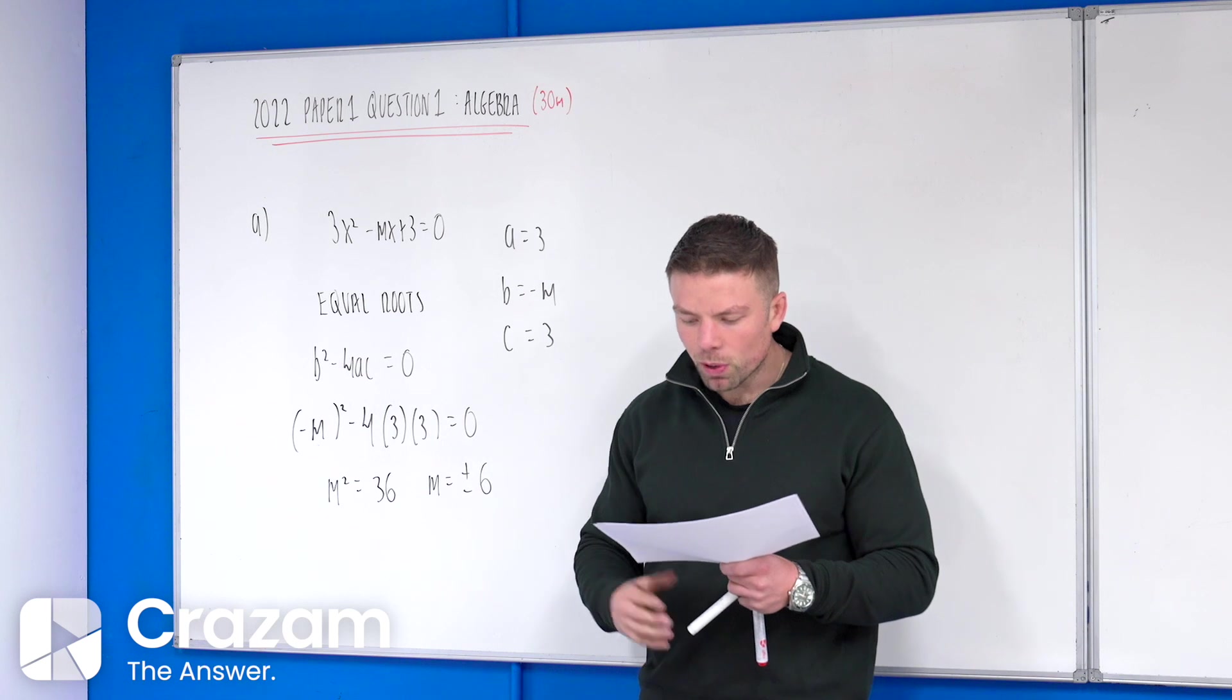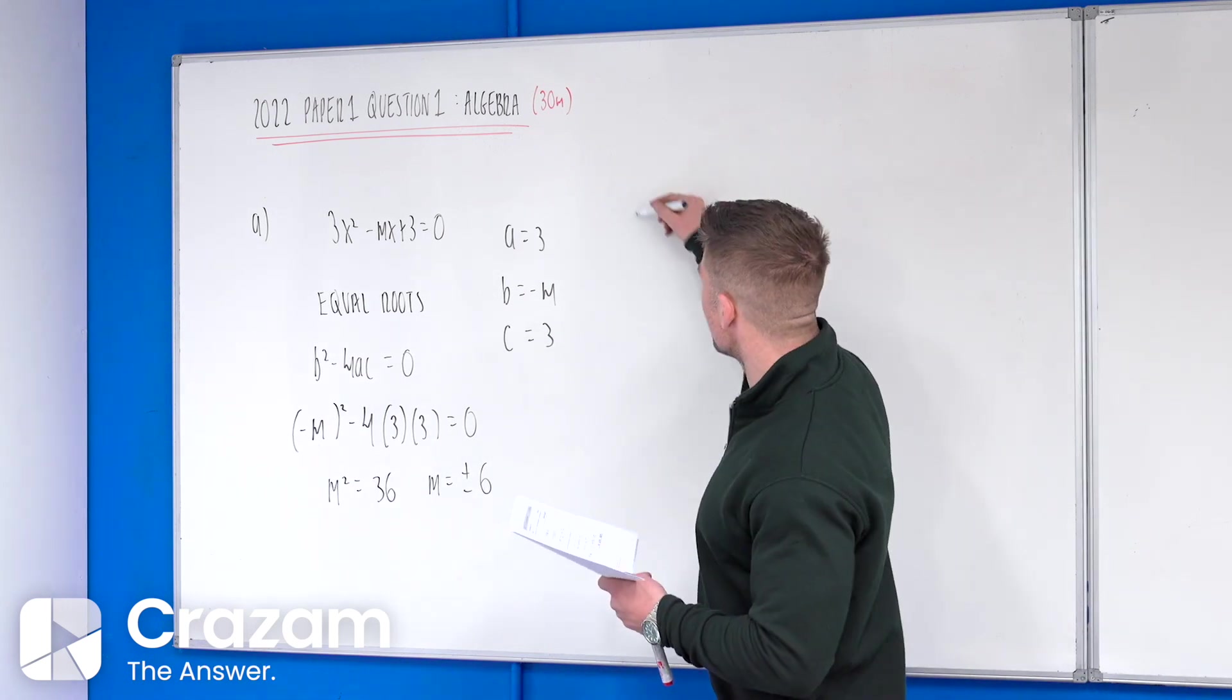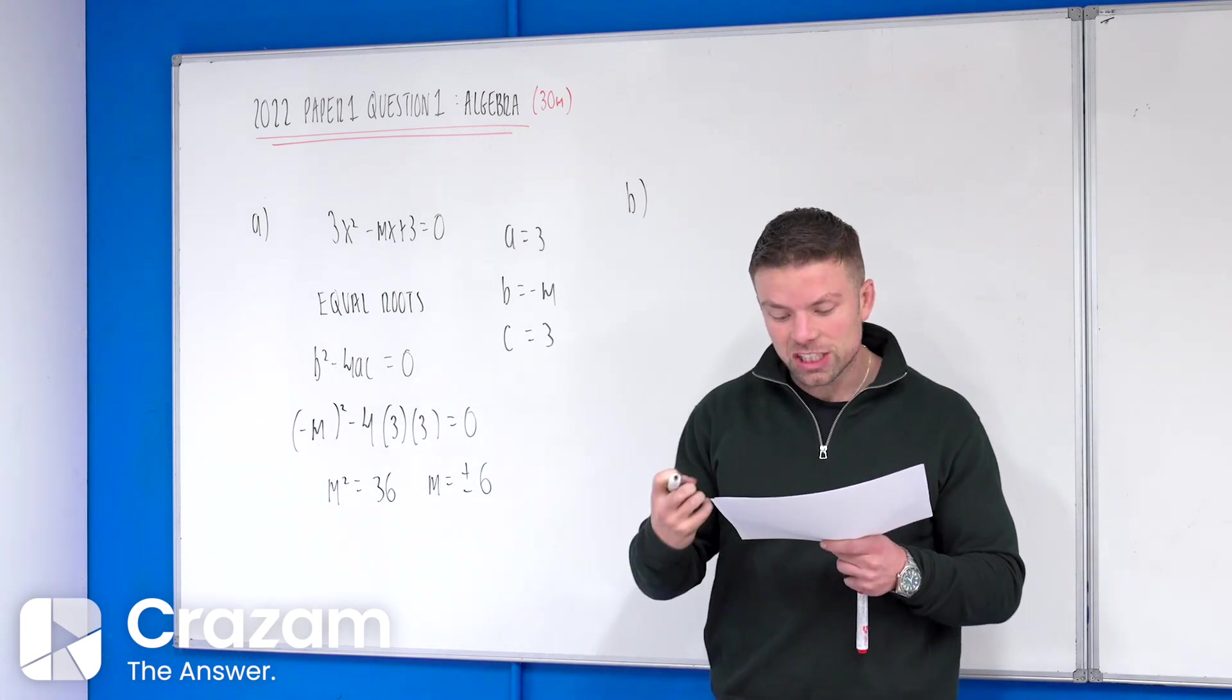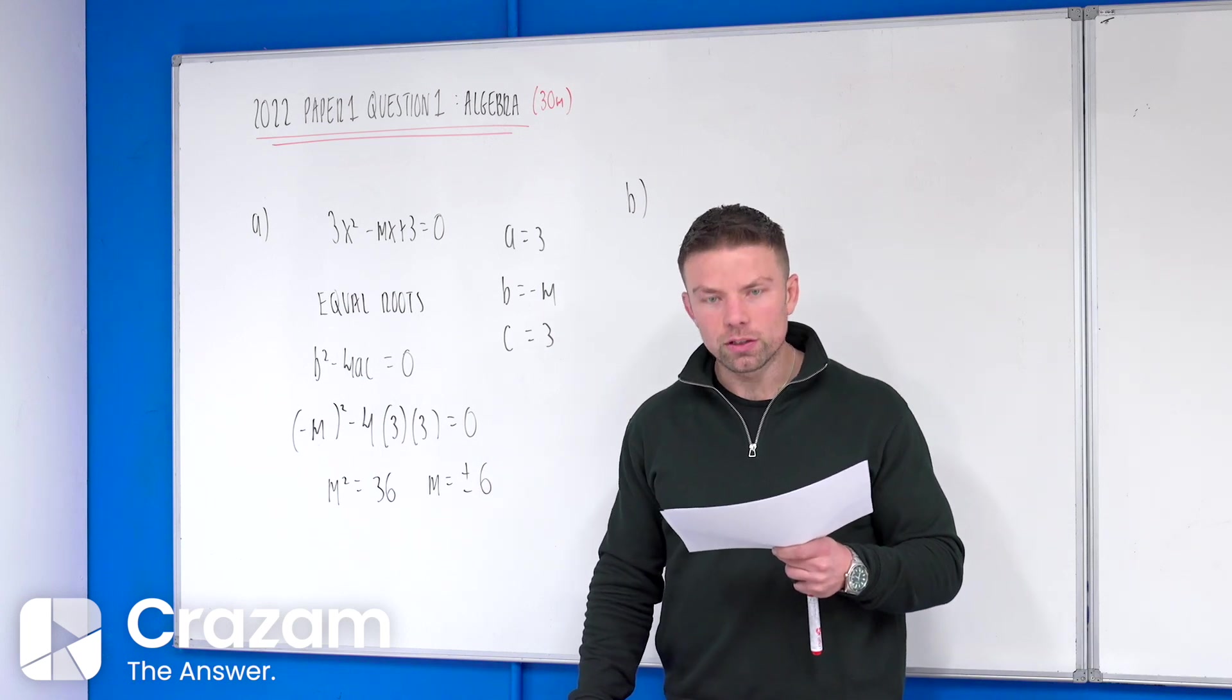Okay, perfect. So that's part A there, one of the ways to do it, and that's the way that I would do it. And part B, which actually branches off from this idea of the discriminant, says explain why the following equation in x has no real solutions.